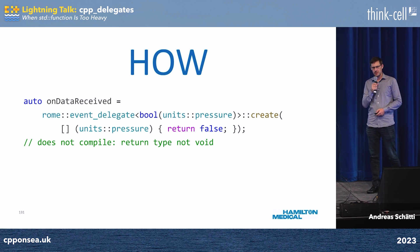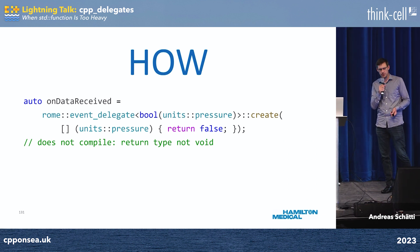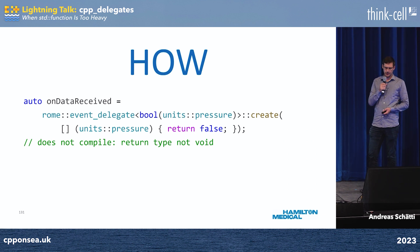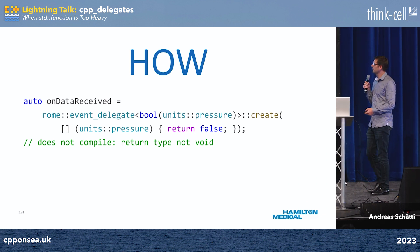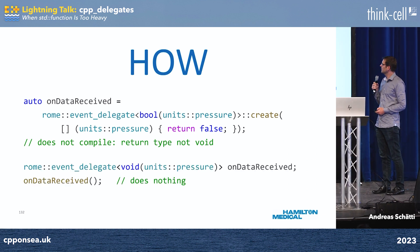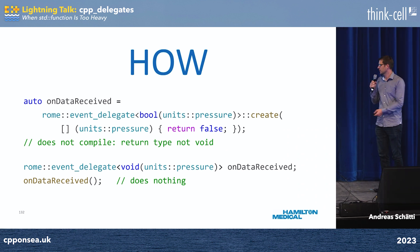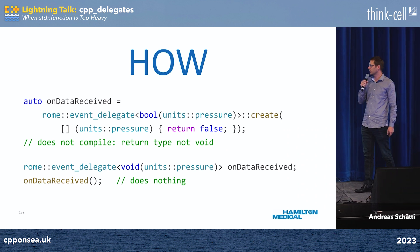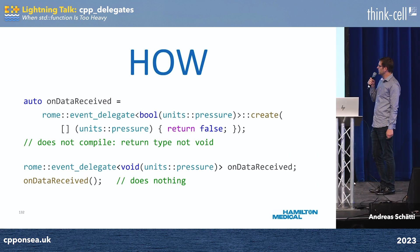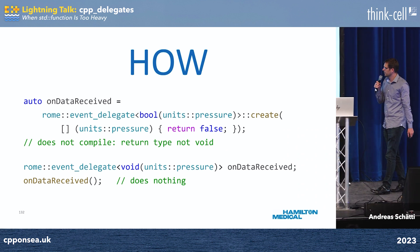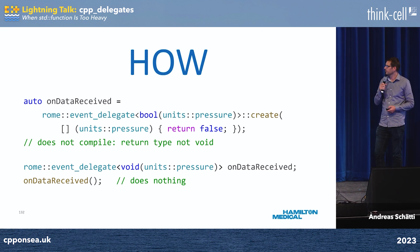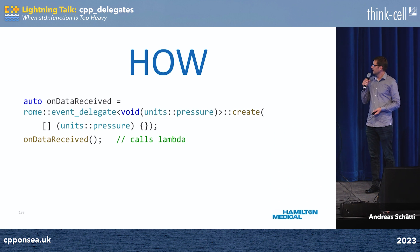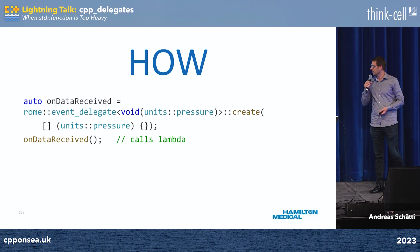You can also use event delegates. This is very useful if you want to give the user the possibility to subscribe to an event, but maybe some people don't want to. So, if you then call it, it does nothing. If you have an empty event delegate, it does nothing when you call it, but you can only pass functions to it that have a void return type, because it's an event, so it shouldn't return anything. This is the case where you have an event delegate configured with a lambda, and it calls it.